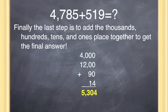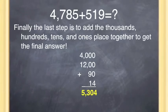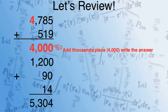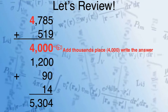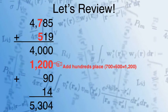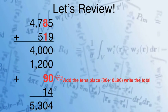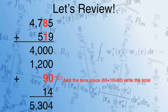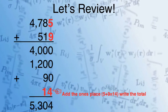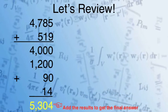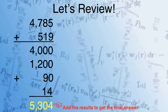The final step is to add the thousands, hundreds, tens, and ones place all together to get your grand total of 5,304. To review: you added the thousands, then the hundreds place, then the tens place to get 90, and then you added 5 plus 9 which gave you 14. All of this added up to 5,304.